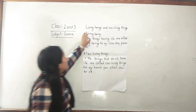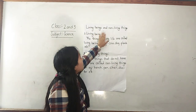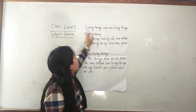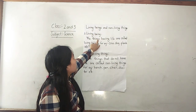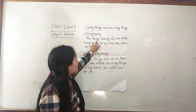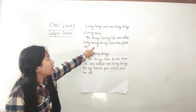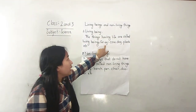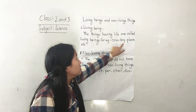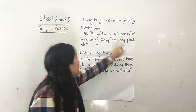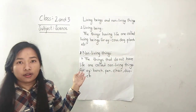Living beings and non-living things. Living beings — the things having life are called living beings. For example, cow, dog, plants, etc.